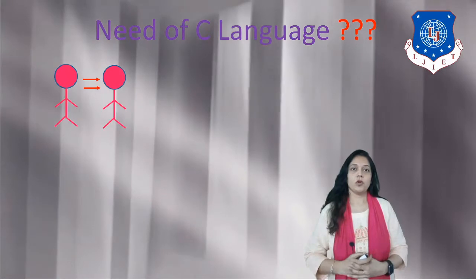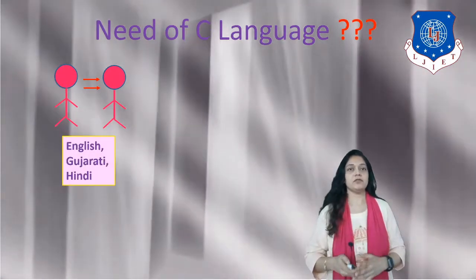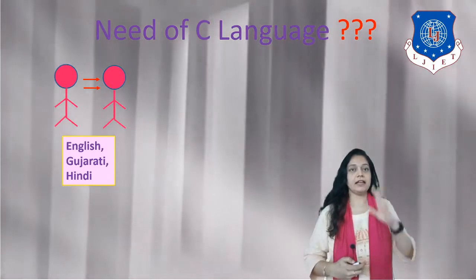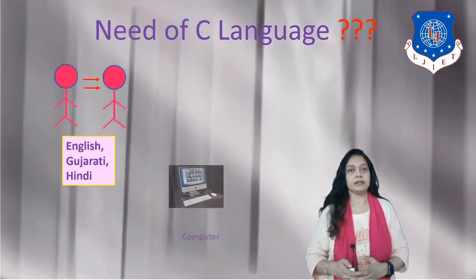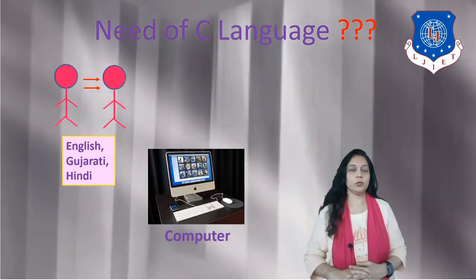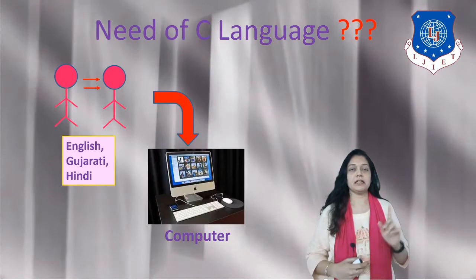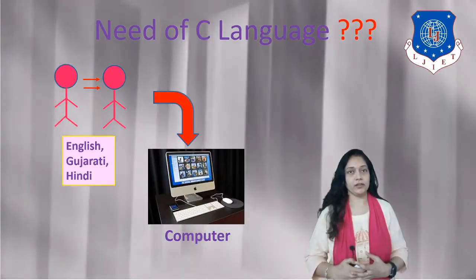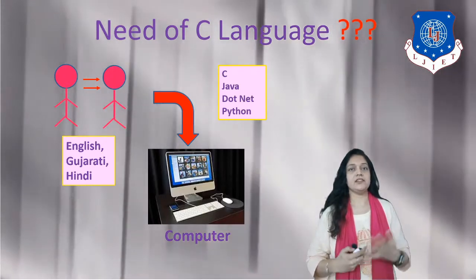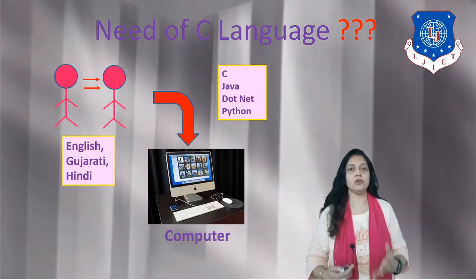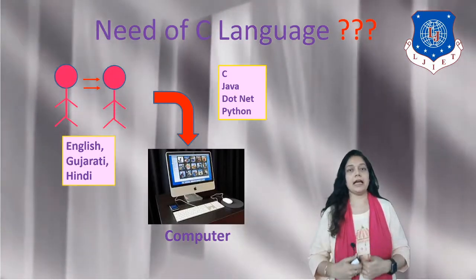Consider two persons who want to communicate among themselves — for that we require a language, which can be English, Gujarati, or Hindi. But when a person wants to communicate with a computer, we also require a language, and that language is your programming language. Any language like C, Java, .NET, or Python can be used for communication between a person and the computer.